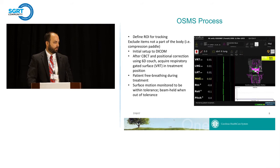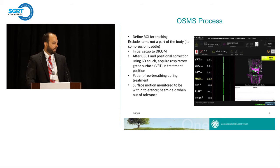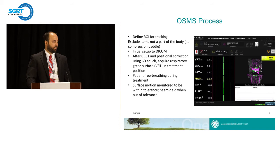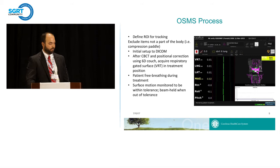The process for OSMS use is similar to anything else we use SGRT for. We define our region of interest based on the simulation CT, use this for initial setup via DICOM, acquire IGRT, and correct position based on volumetric imaging. For free breathing patients we acquire a respiratory gated surface reference in treatment position. For SBRT specifically it's important to exclude items like abdominal compression plates and larger back locks that may not be present on other treatments. We then monitor the patient using this reference image and hold the beam when the patient is out of tolerance.